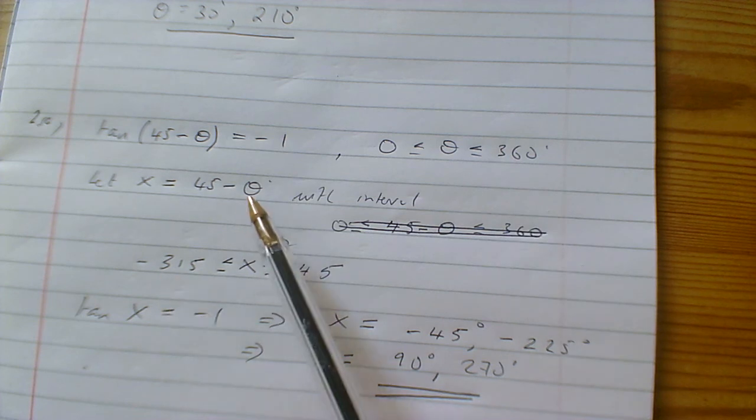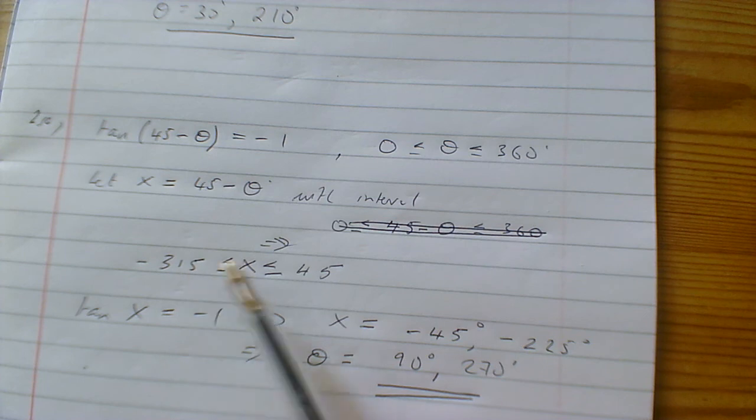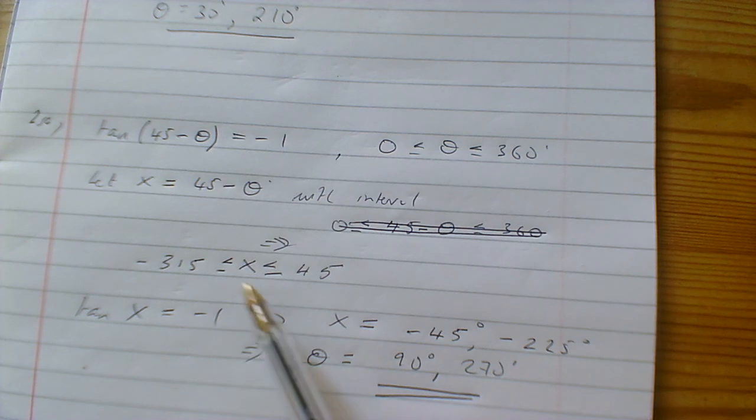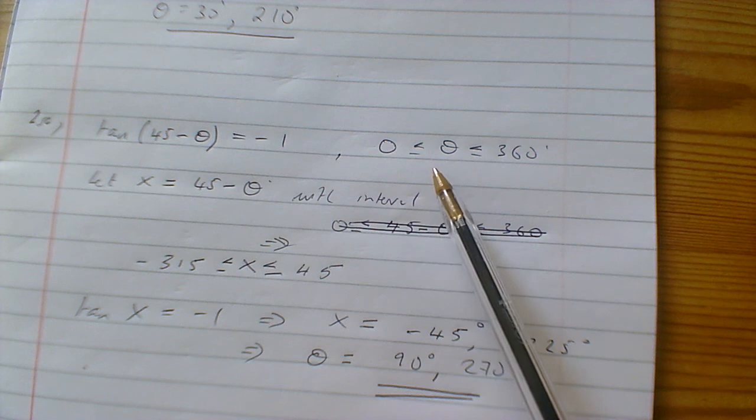We find solutions of X that lie between -315 and 45, because once we substitute back for θ, those solutions will lie within the required interval.